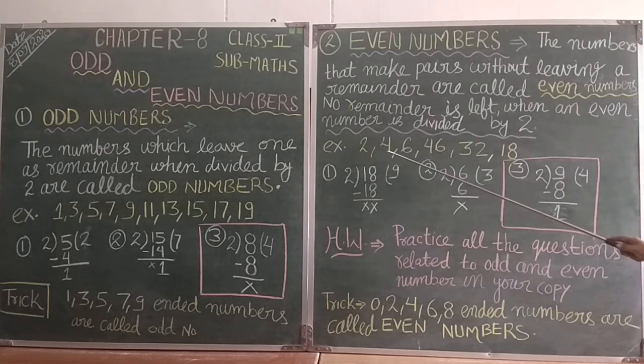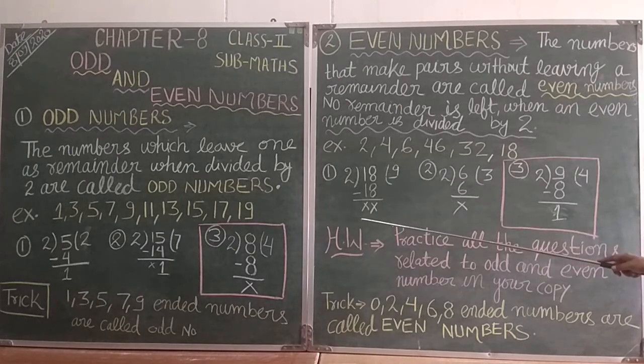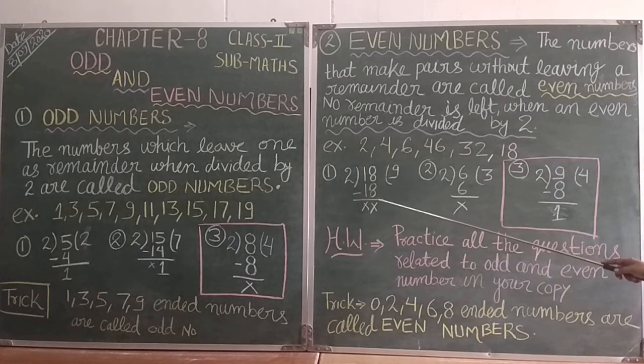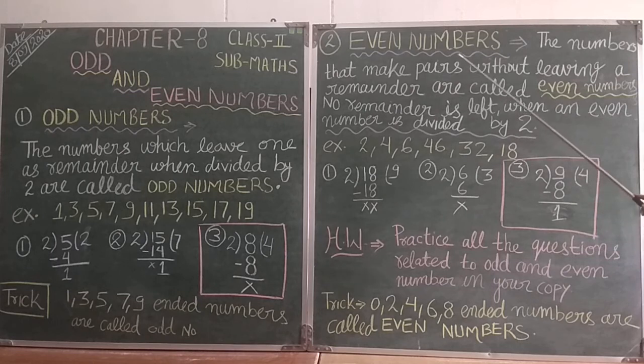Let's check examples of even numbers. 2, 4, 6, 8, 32, 80. These are even numbers. Now we will divide 18 by 2. 2 nines are 18. When you have 18 minus 18, the remainder is 0. So 18 is an even number.